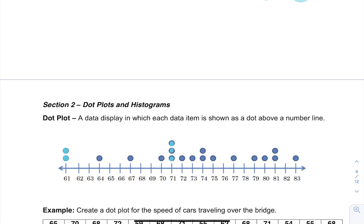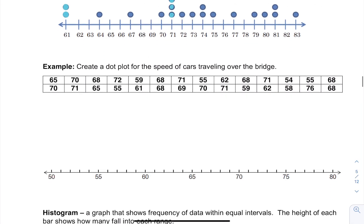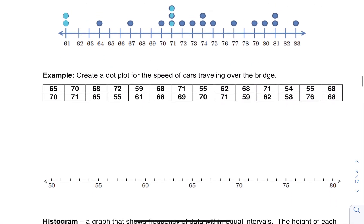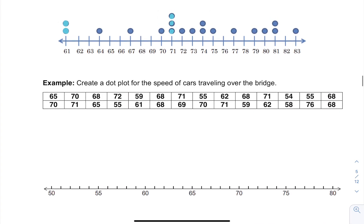So if we are asked to create a dot plot for the speed of cars traveling over the bridge, what we're going to do is just create a dot over the number every time we see it. So if we start with something like 65 and we notice there's a 65 here and a 65 here, we're just going to put two dots and I like to make them evenly spaced so that you can see them each time.